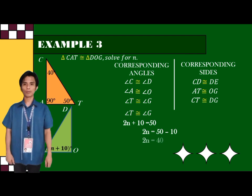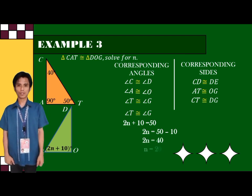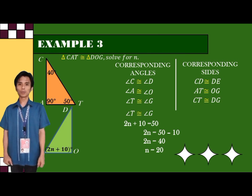Now, we are going to combine like terms. And the equation will be 2N is equal to 50 minus 10.